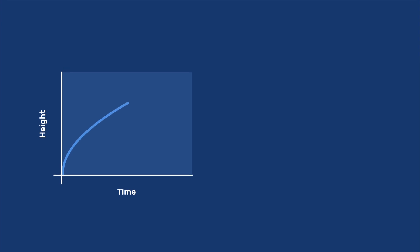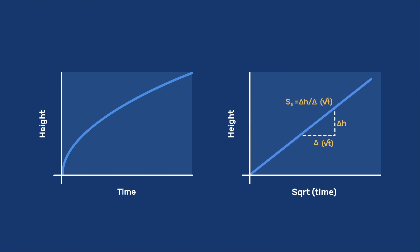As shown in this plot, it implies that while h increases over time, there is a curvature to that increase, indicating that the rate of rise slows down as the height increases. When the same data are plotted versus the square root of time, we get a straight line, of which the slope is the sorptivity.